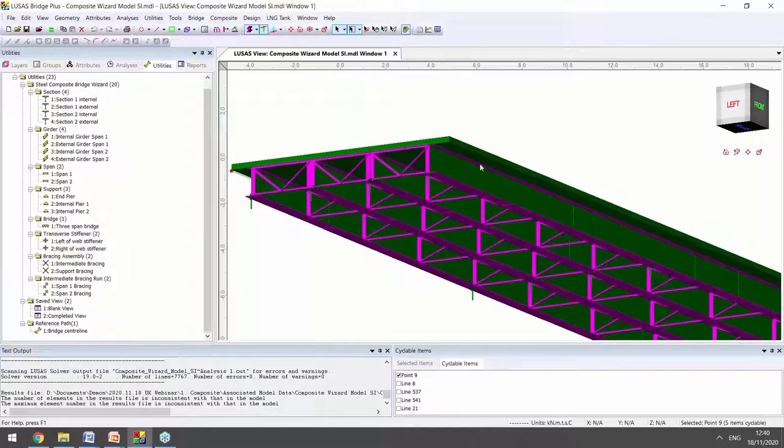And we can see in green the concrete top slab and the webs of the girders. And in pink for beam elements, we can see the top and bottom flanges, cross bracing and the stiffeners.